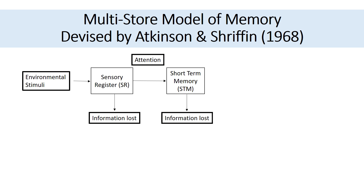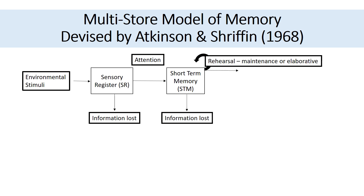Our short-term memory is what we use to hold a small amount of information — about seven items — and we use that information in our conscious thought processing. But like much of the sensory register, the vast majority of information that goes into our short-term memory is lost fairly quickly, after about 18 seconds. Now, to try and keep the information in short-term memory so we can use it, we might repeat the information inside our own minds. If you've ever been given somebody's phone number, you have an internal voice repeating the number again and again. This process is called rehearsal, and it's an important part of how information stays in short-term memory or how it's moved into long-term memory.